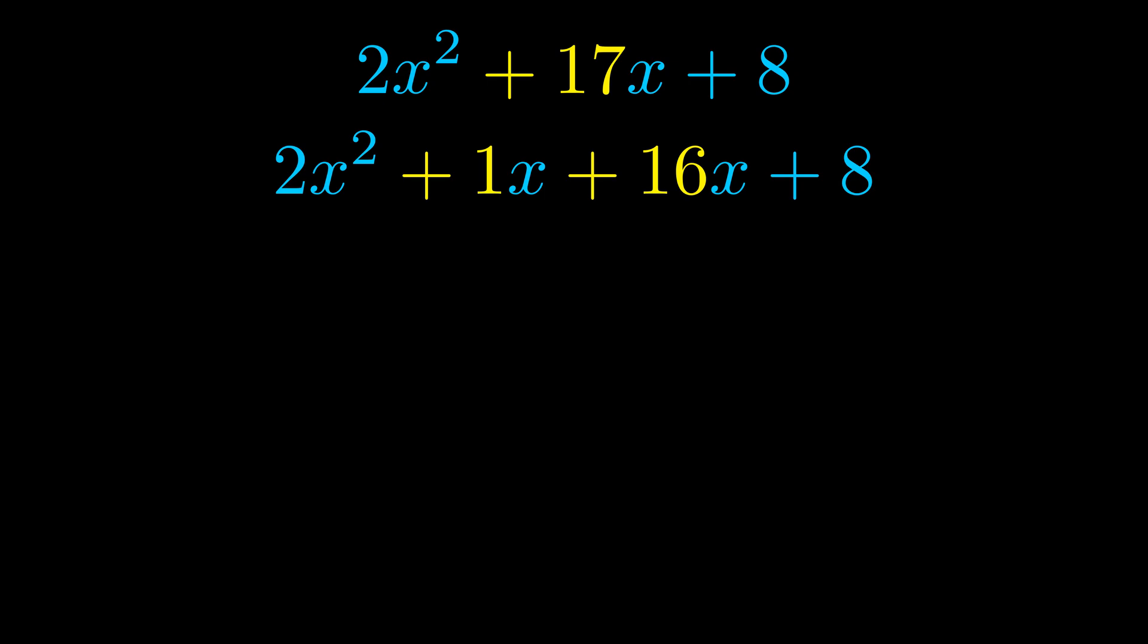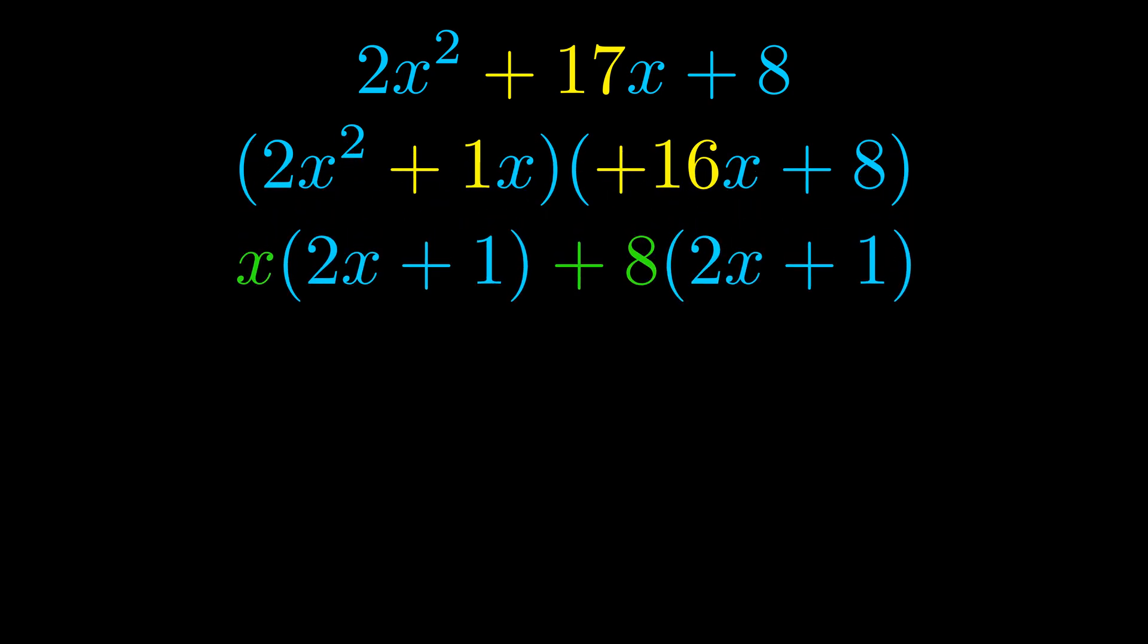Once we've done this we go ahead and we put parentheses around the first term and the last term. And we do that so that we can take the greatest common factor out of both terms. We can see the greatest common factor is now outside in green. Notice also how what remains inside of the parentheses is the same in both cases.